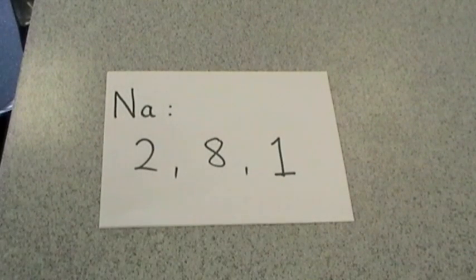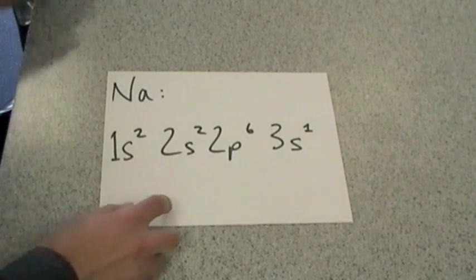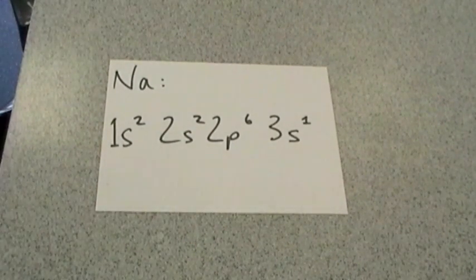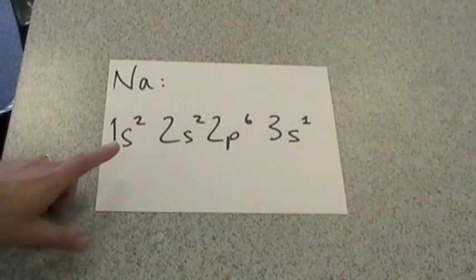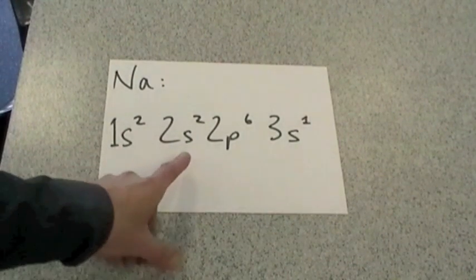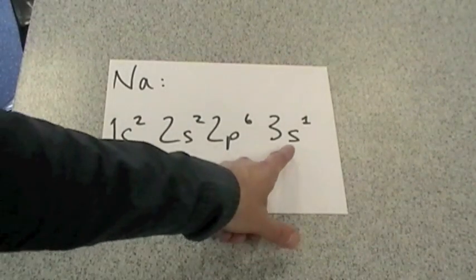So we have this electronic configuration 2, 8, 1. At A level, we use something like this. So instead of saying 2, 8, 1, it's 1s² 2s² 2p⁶ 3s¹.